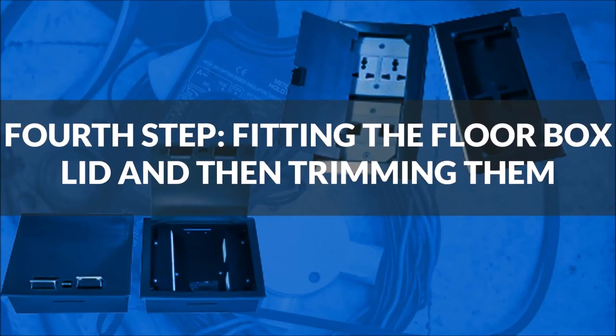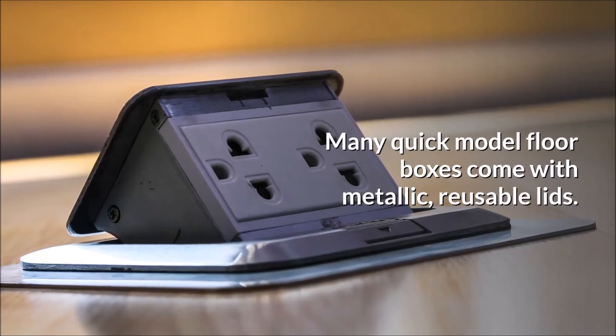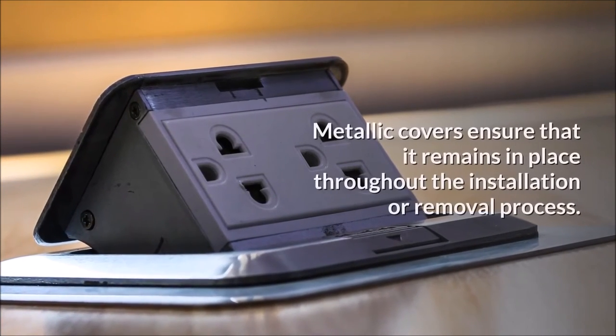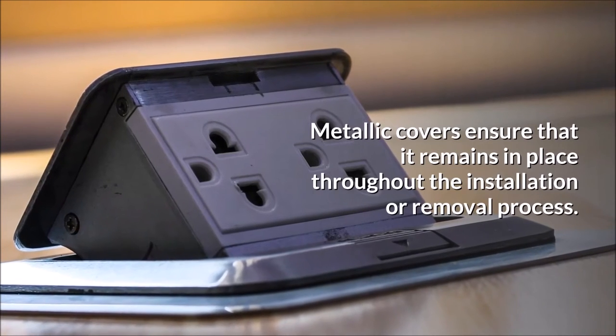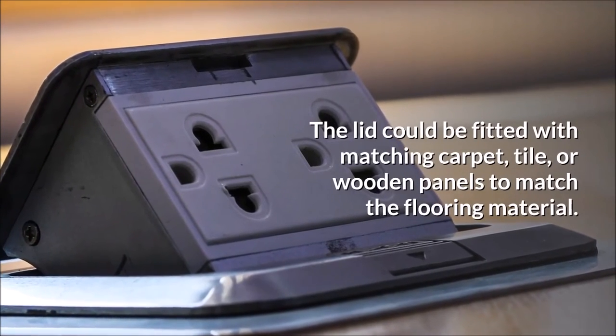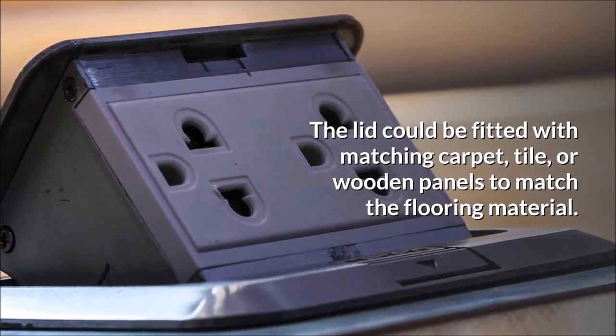Fourth step, fitting the floor box lid and then trimming them. Many quick model floor boxes come with metallic, reusable lids. Metallic covers ensure that it remains in place throughout the installation or removal process. The lid could be fitted with matching carpet, tile, or wooden panels to match the flooring material.